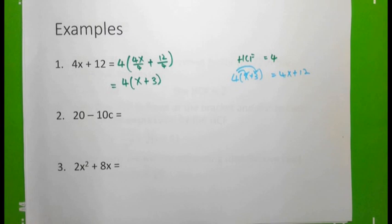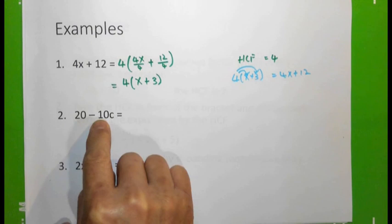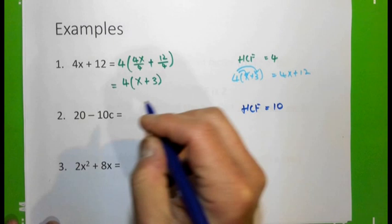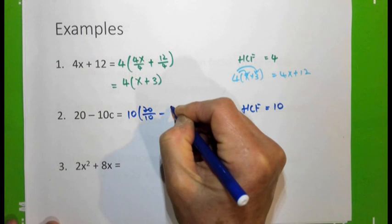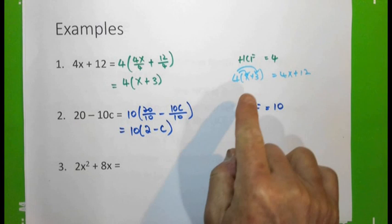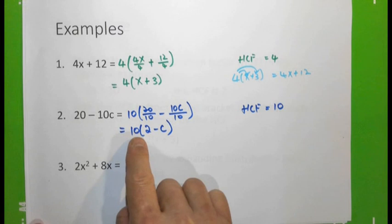What about question 2: 20 - 10c? What is the highest common factor? 10c can be divided by 10, and 20 can be divided by 10, so the HCF is 10. If we take 10 out, we get 20 divided by 10 minus 10c divided by 10, giving us 10 into (2 - c). Looking at this straight away, you can see that 10 times 2 gives 20, and 10 times (-c) is -10c.